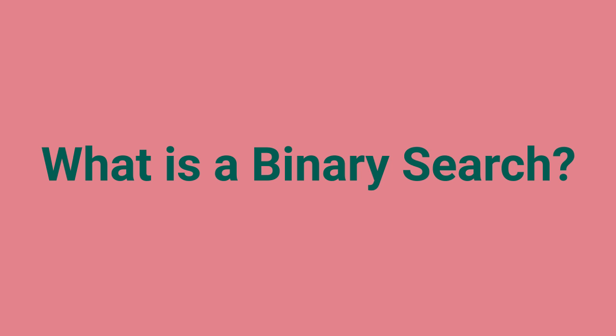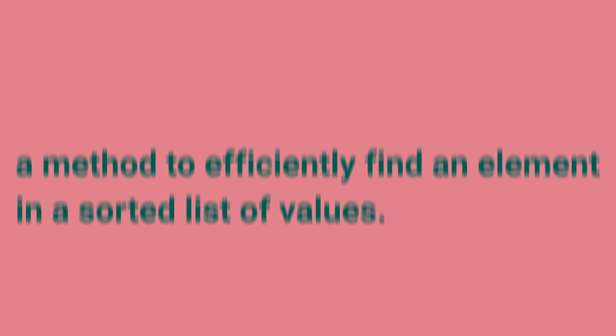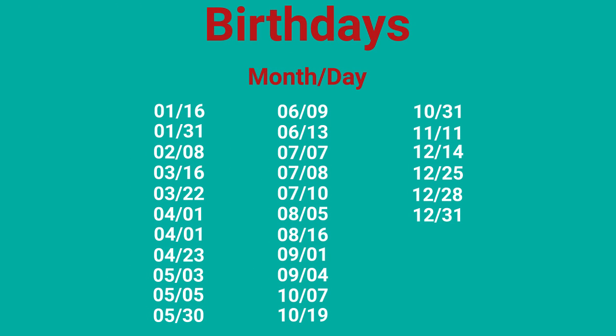What is a binary search? Binary search is a method to efficiently find an element in a sorted list of values. Say you have a list of all the birthdays in your class and you want to find the one that comes after yours.